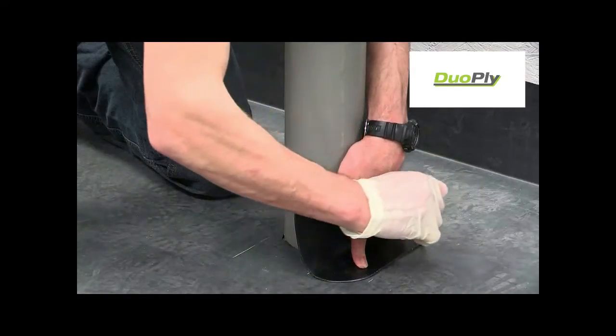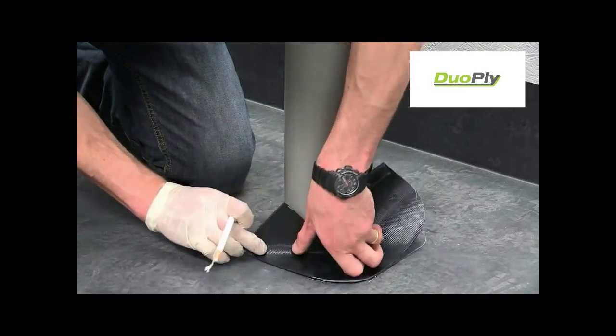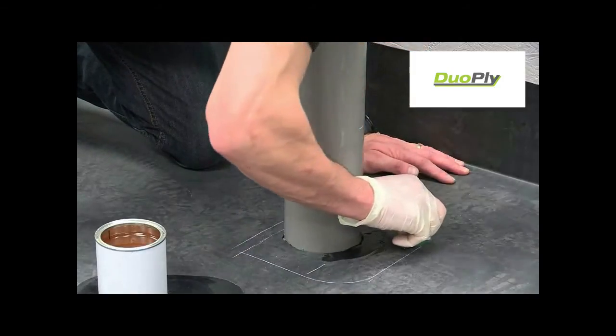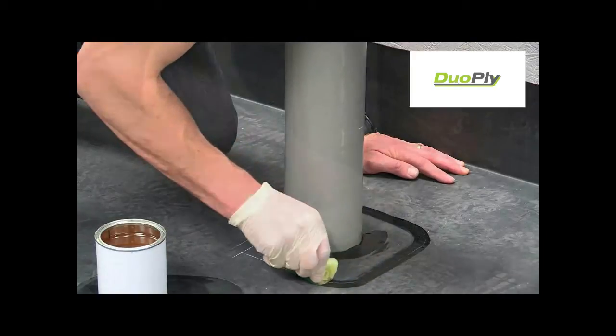Reposition the tape detail and mark round it. This is a target area for the EPDM primer. On dusted membranes, primer must be applied with a scrubbing pad. If the membrane is factory pre-cleaned, a brush may be used.